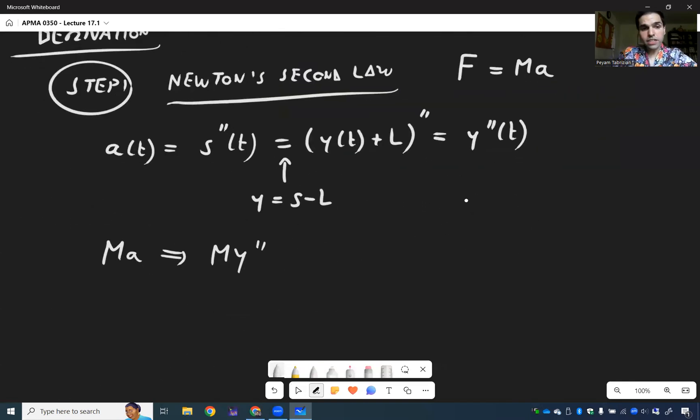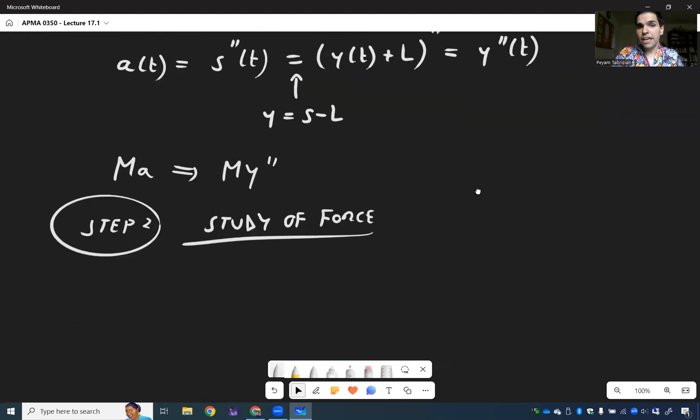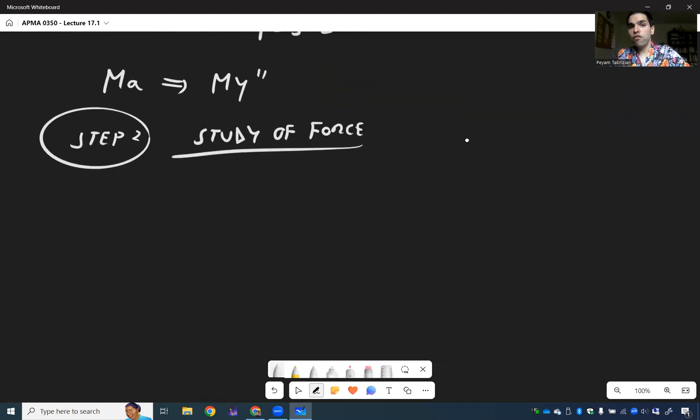So m a already gives you m y double prime. So that was one component of the equation here, m y double prime, and we want to find the other ones. And now the rest is just the study of force. And there is not only one force in play, but it turns out there are four forces at play.